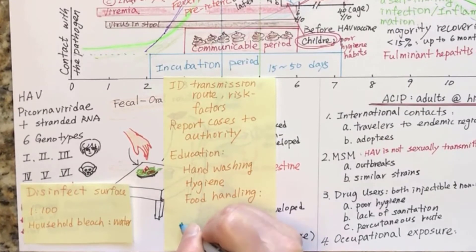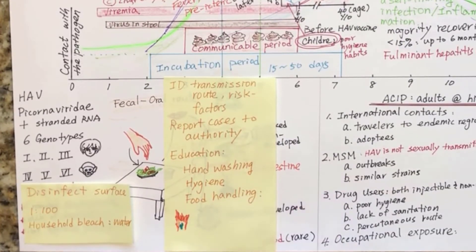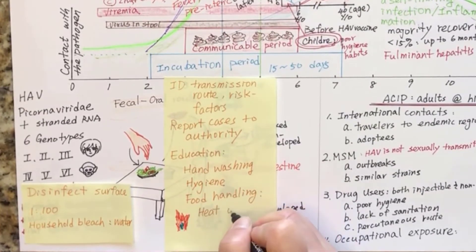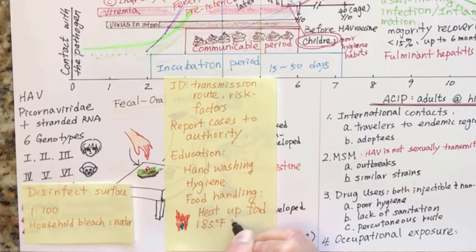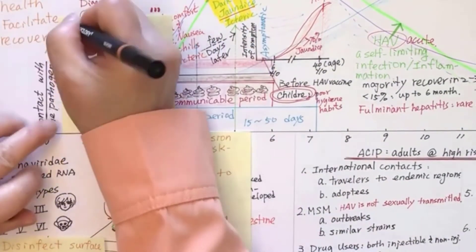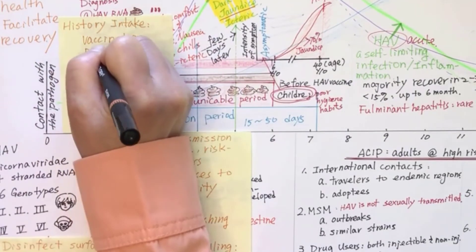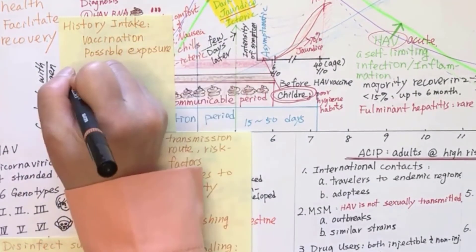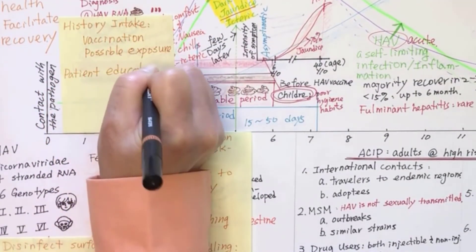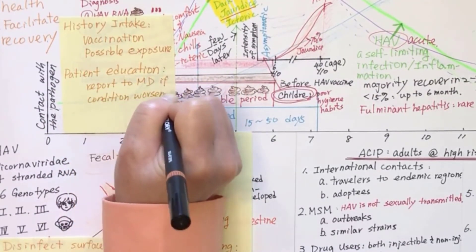Teach the community on proper food handling — for instance, heating food at more than 185 degrees Fahrenheit for at least one minute. Encourage community members to take breaks from work when not feeling well. Conduct history intake and collect data, including vaccination history and possible exposure to an infection. Teach the family and patient to report to the physician if the patient's condition worsens.